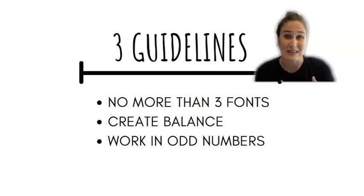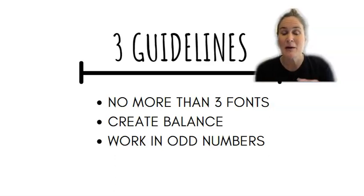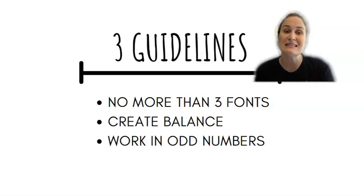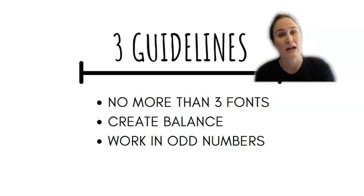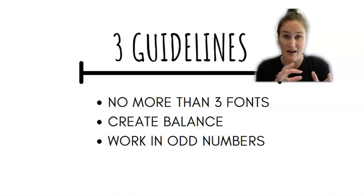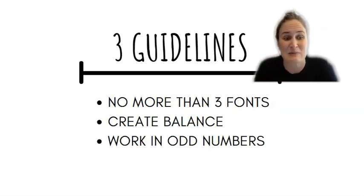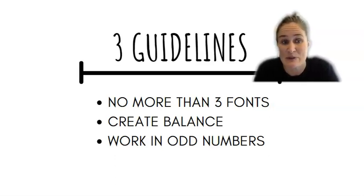You also want to create balance in your design. Balance doesn't always mean symmetry, but it just means you want to make sure it's even on both sides. And the third design guideline is to work in odd numbers. In your design elements you typically want to have one, three, or five. Working in odd numbers helps your eye flow through the design rather than feeling like everything has to be completely paired up.